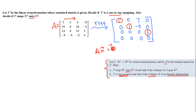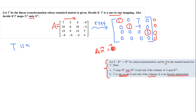Since the columns are not linearly independent — the third column can be written as a linear combination of the others (7 times column one plus negative 9 times column two plus 0 times column four) — the transformation T is not one-to-one. Setting Ax = 0 yields infinitely many solutions, confirming T is not one-to-one.